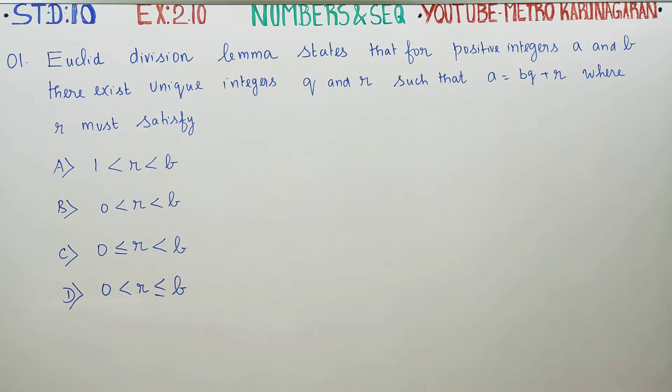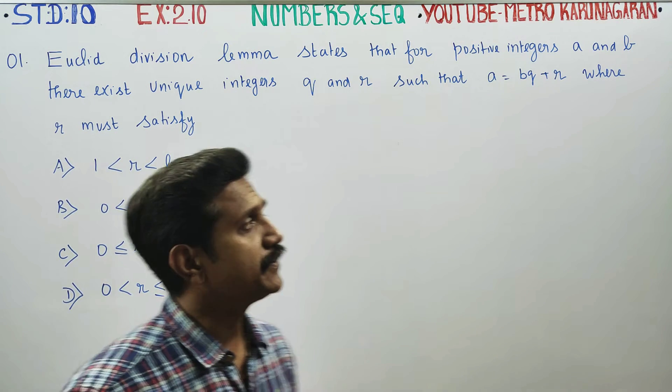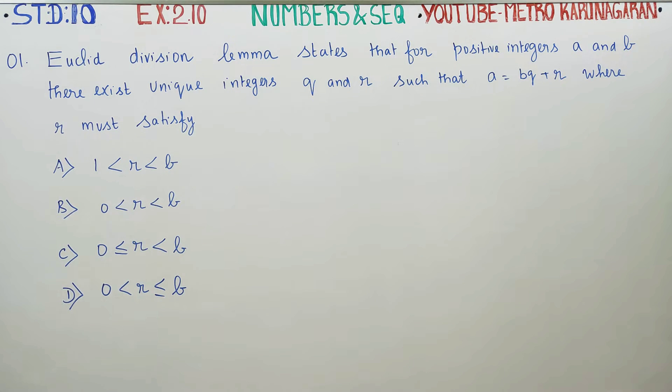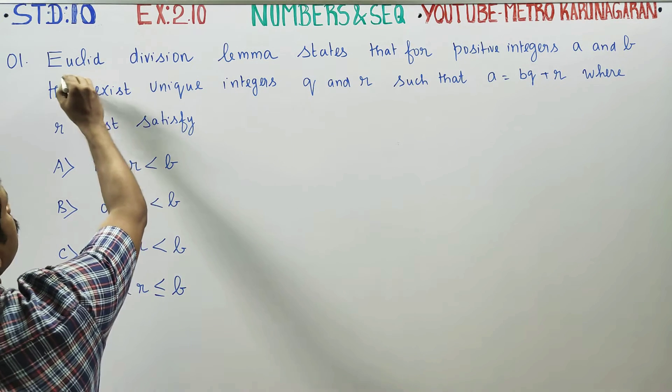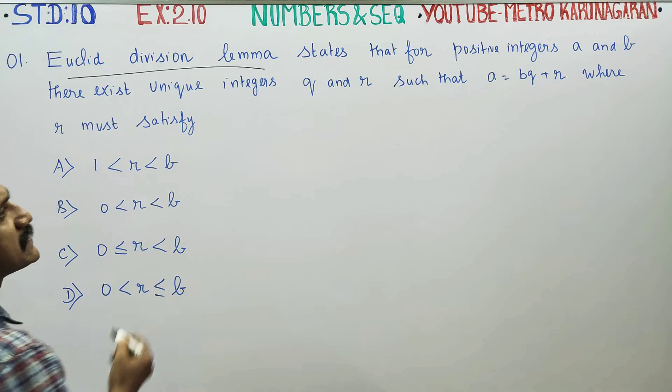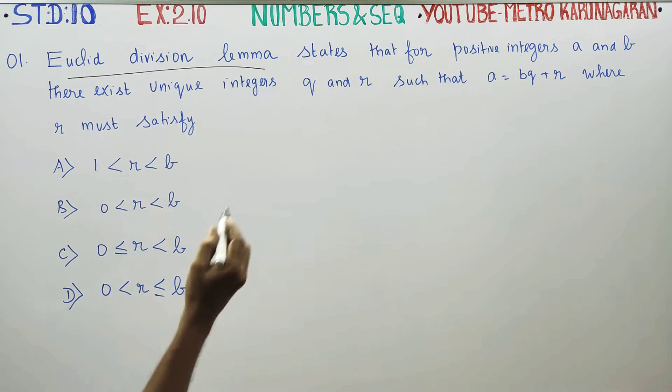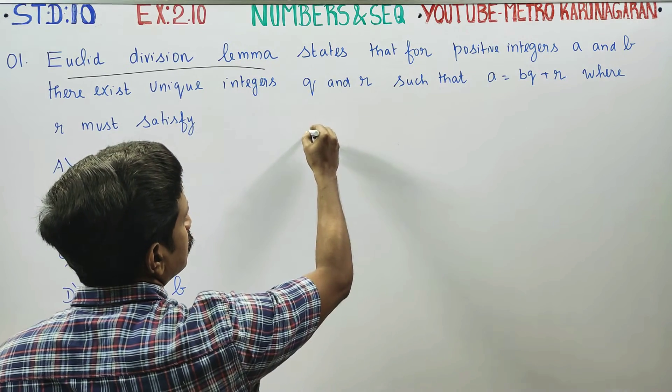Dear 10th standard students, in exercise number 2.10, Euclid division algorithm or Euclid division lemma states that for positive integers A and B there exists unique integers Q and R such that A is equal to BQ plus R.